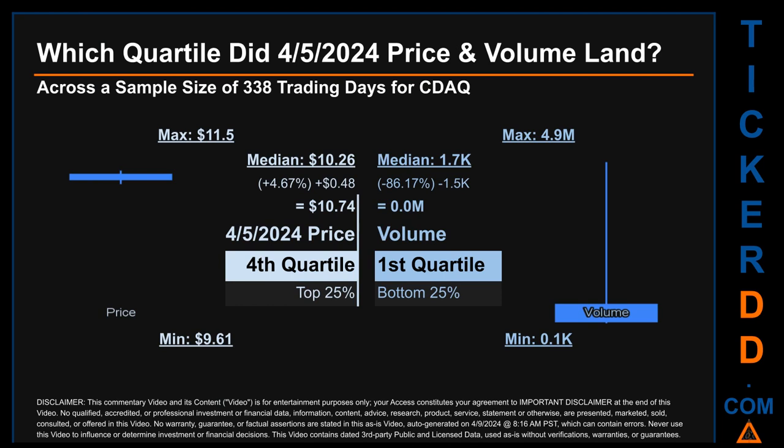Quartiles tell us about the spread of a data set by breaking it into quarters, just like how the median breaks the set in half. Descriptively, CDAQ has a median price of $10.26. Therefore, the April 5th, 2024 price was higher than that middle marker by 4.67%. The day's volume of zero million was less than the median by 81.44%.